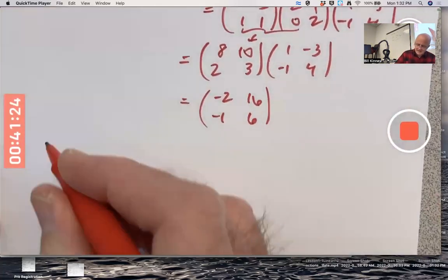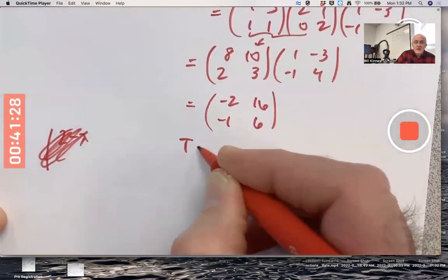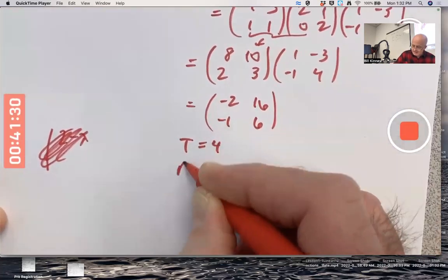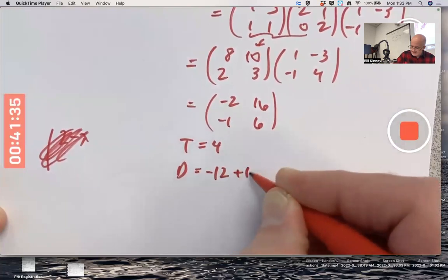Okay. Let's check it. Let's find the determinant of A minus lambda I. Okay. Let's just find the trace and determinant. Trace is four. Determinant is negative twelve plus sixteen is four.